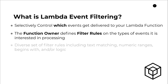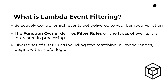Using filter rules, there are a diverse set of them including text matching, numeric ranges, begins with, and/or logic, and a whole bunch of others. This allows you to develop very comprehensive rules to narrow down what type of events you want delivered. For example, you can match by a text field and then only want events where another field contains a numeric value over a certain threshold.